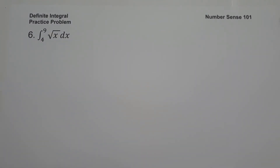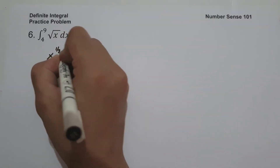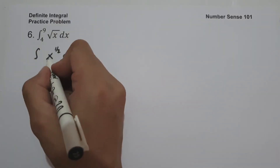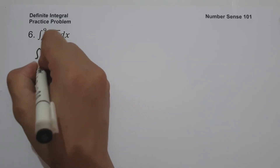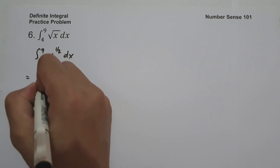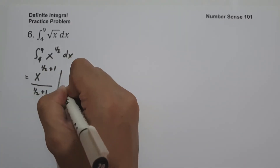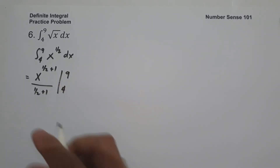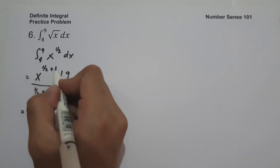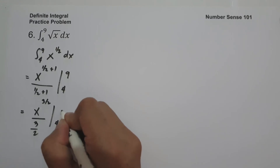For example 6, what is the anti-derivative of the square root of x dx, evaluated from 4 to 9? We rewrite the square root of x as x raised to 1/2. The anti-derivative of x raised to 1/2 is x raised to 1/2 plus 1 over 1/2 plus 1. Since 1/2 plus 1 equals 3/2, this gives x raised to 3/2 over 3/2, evaluated from 4 to 9.